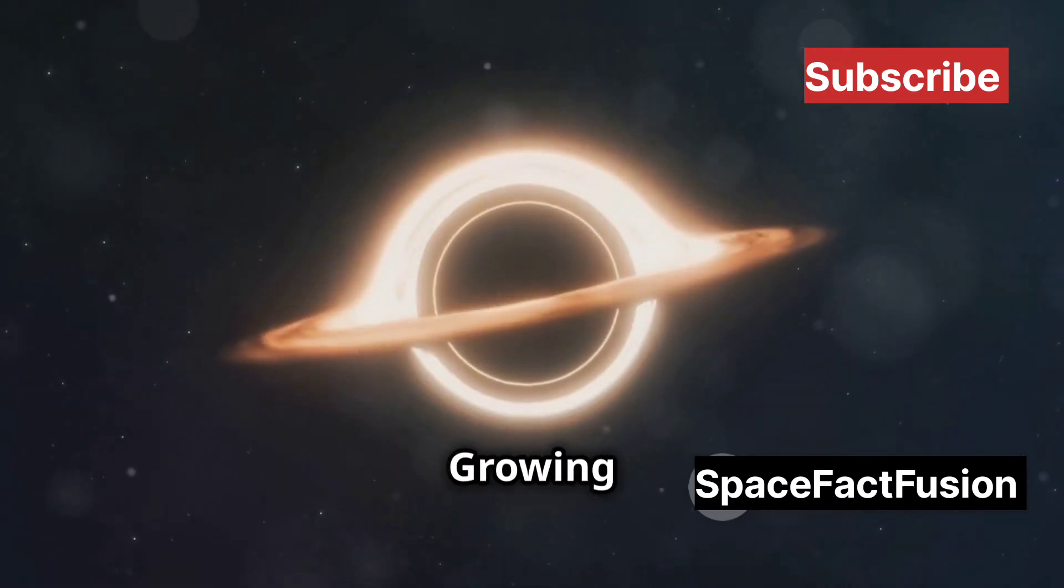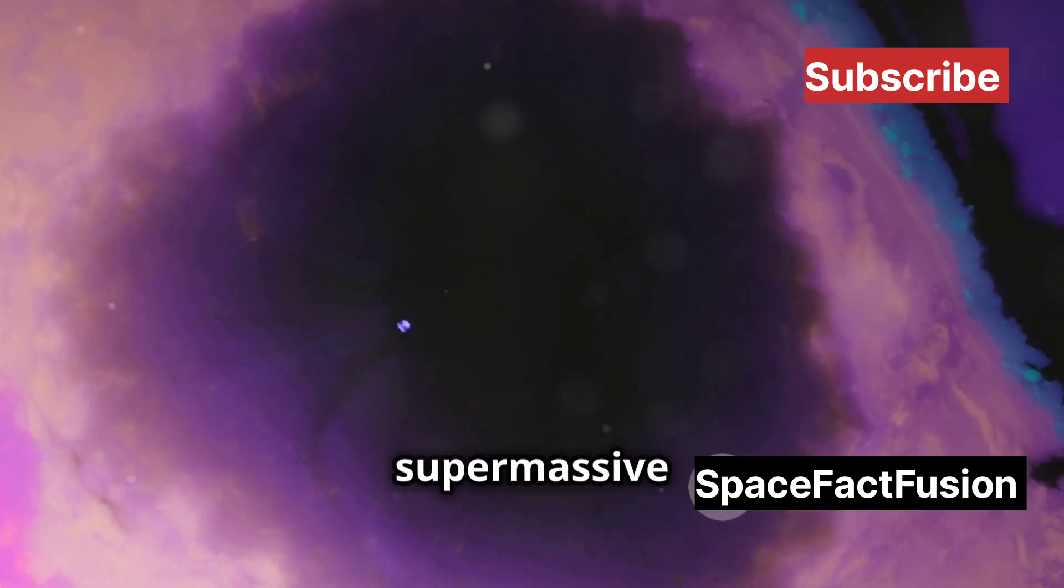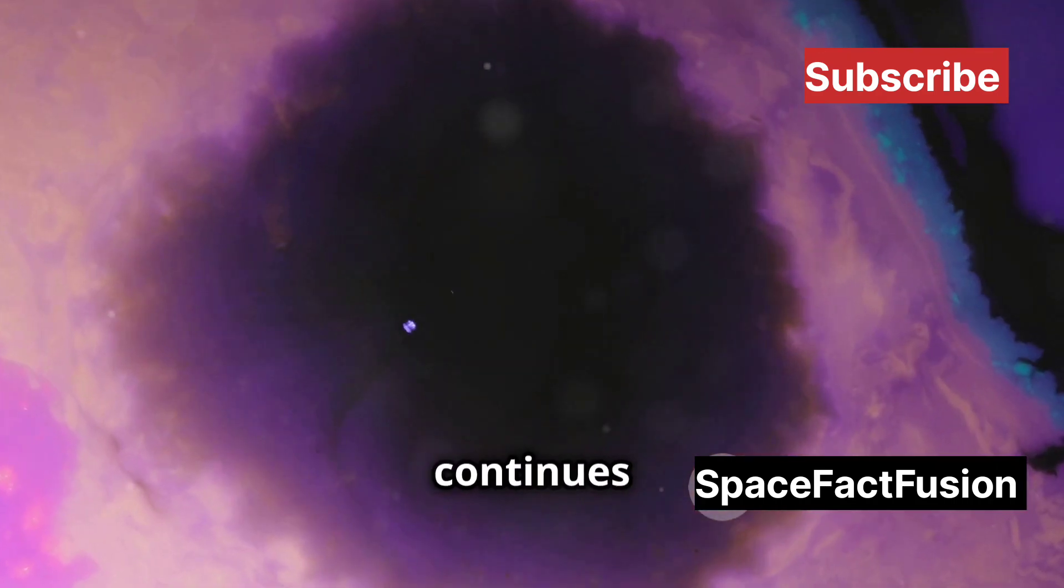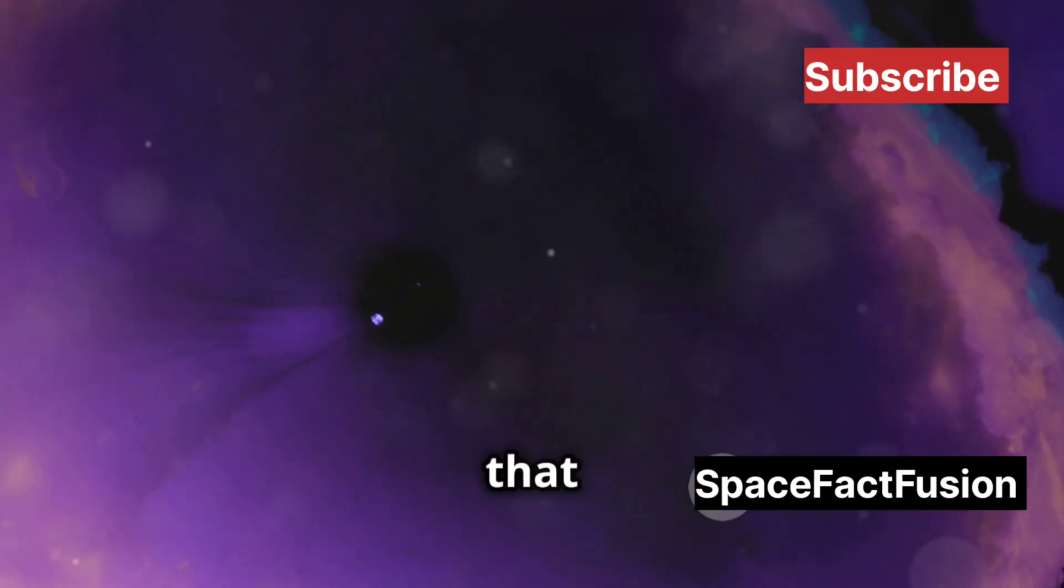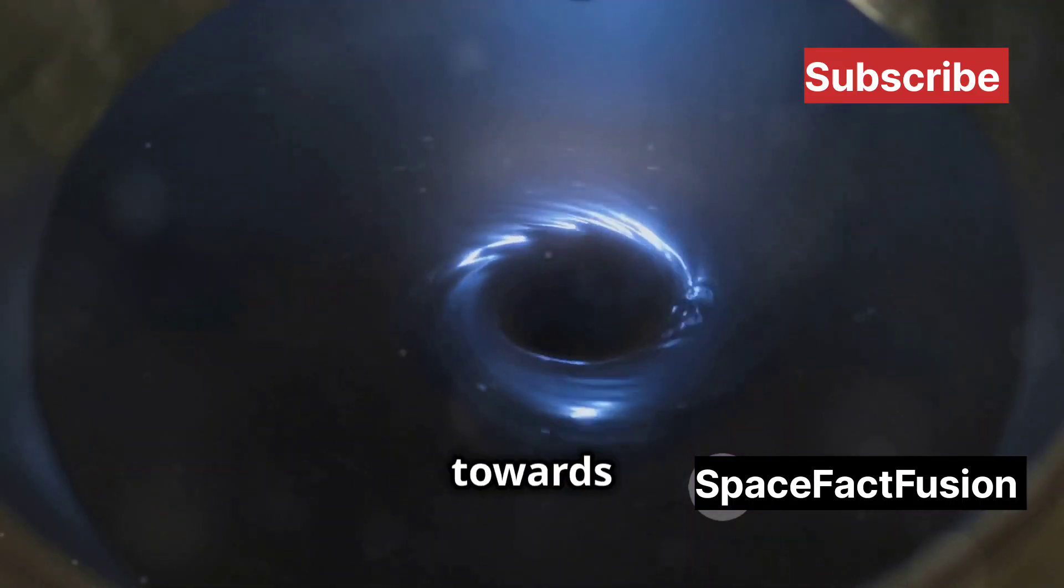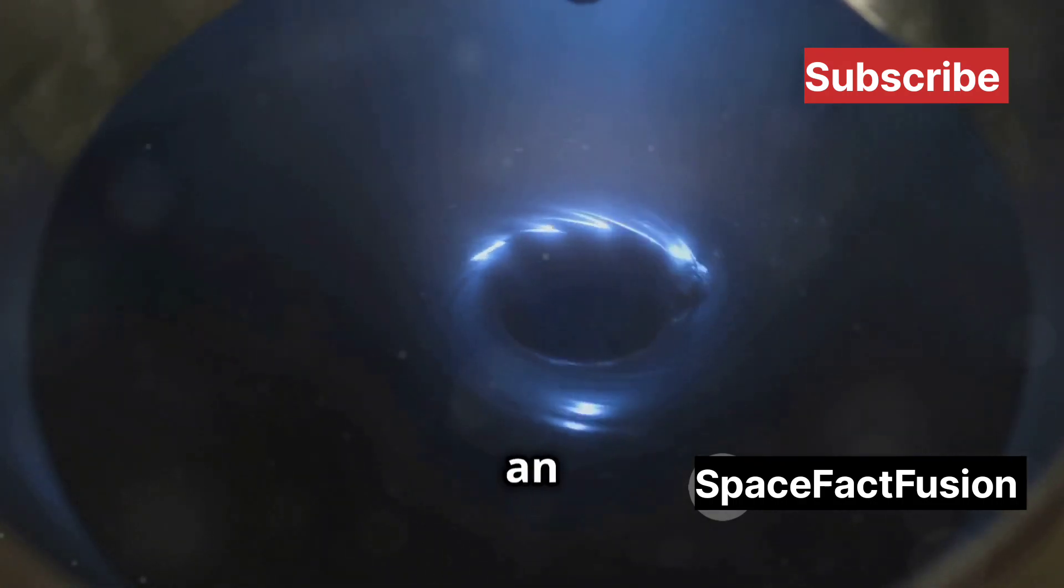Once a supermassive black hole forms, it doesn't just sit there. It continues to grow, devouring anything that ventures too close. As gas and dust fall towards the black hole, they form a swirling disk of superheated matter, called an accretion disk.